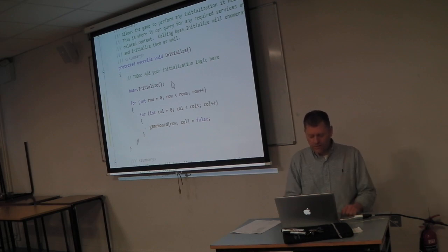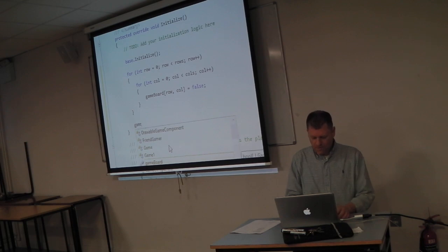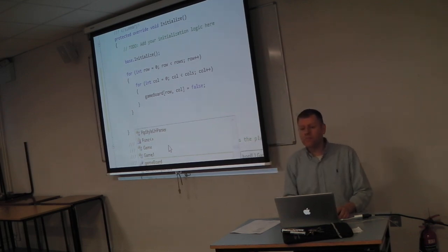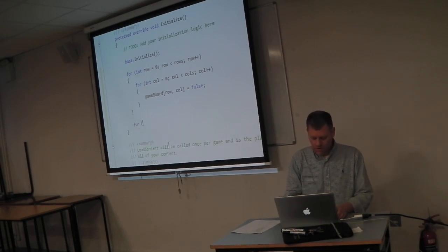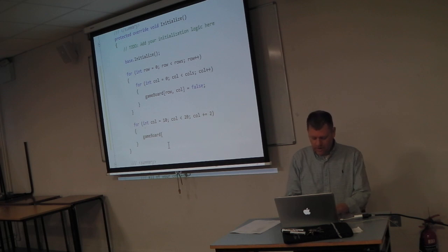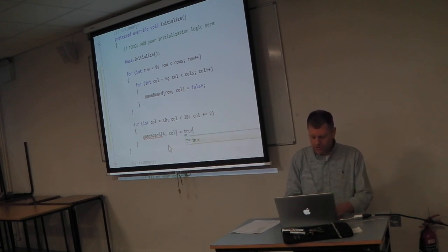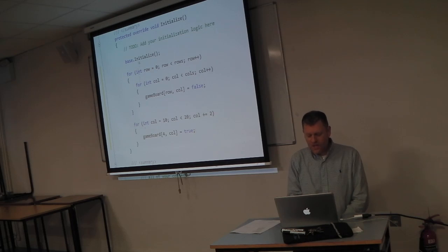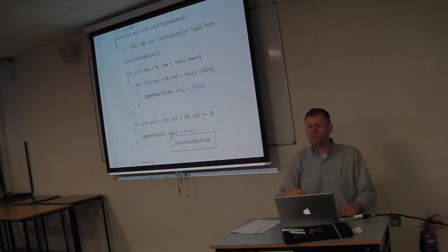Now I'll turn a few cells on so we can draw them. I'll use a little for loop to draw a line in the middle: for (int col = 10; col < 20; col += 2) and set gameBoard[4, col] = true. So I've cleared the game board and turned a few cells on — I should see some dots getting drawn on screen.